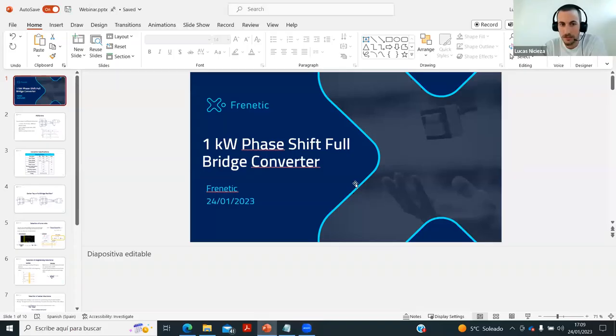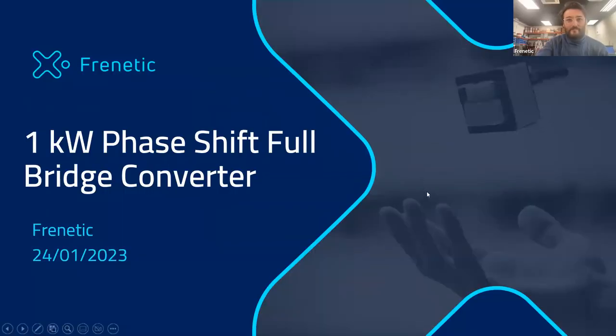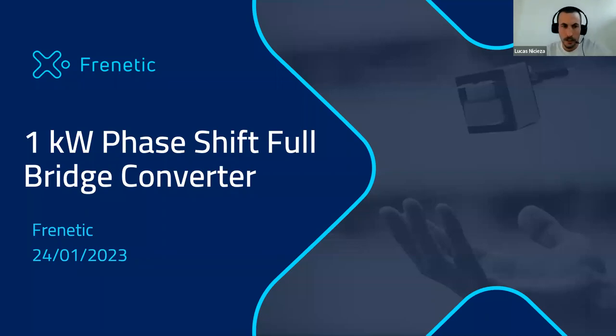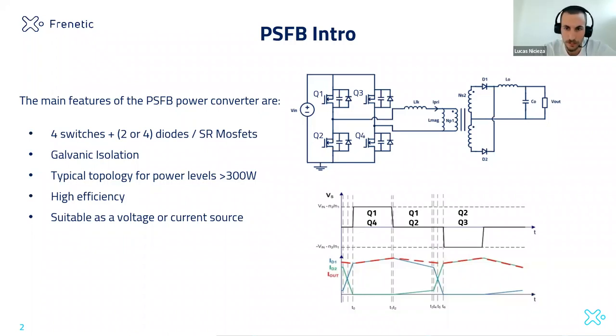I'll start sharing my screen. Today we are going to talk about the phase-shift full-bridge converter. We are going to do an example case for the design and simulation of the magnetics for a 1 kW phase-shift full-bridge converter. The basic things about this topology: we have an input stage with a bridge of four MOSFETs, and then on the secondary side we can have either a couple of diodes, synchronous rectifiers, or a full-bridge rectifier.